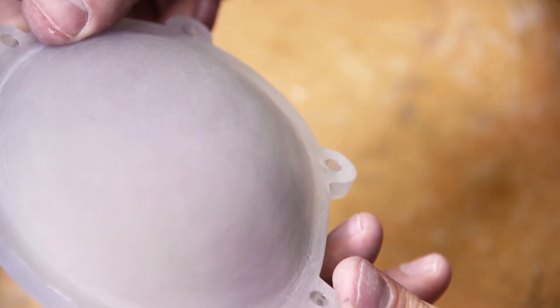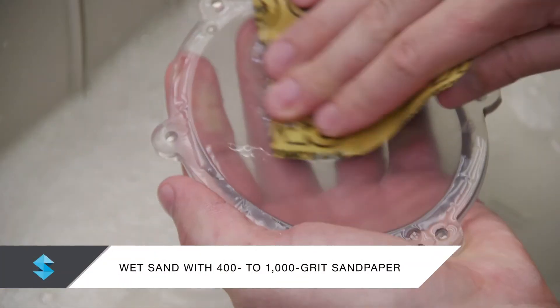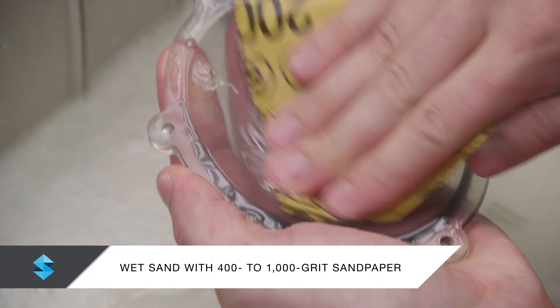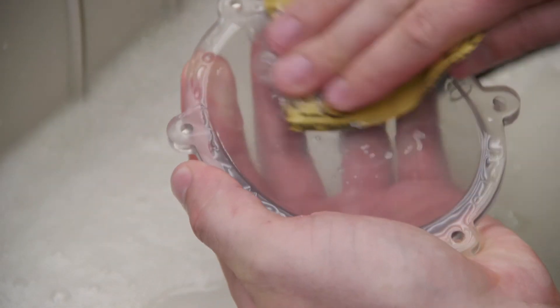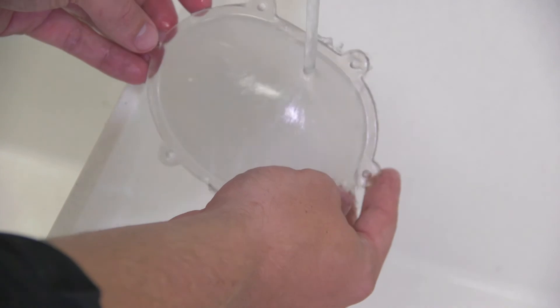Dry sanding may leave scratches on the model. To remove them, lightly wet sand the model with 400 grit, then 600 grit, and finally 1000 grit sandpaper. Rinse the model between each sanding to remove any dust or residue.